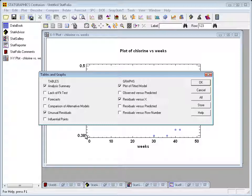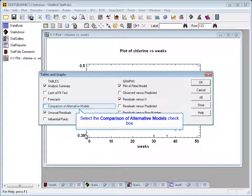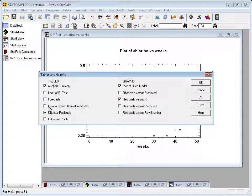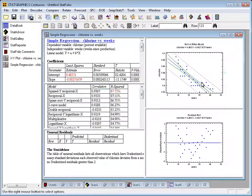The tables and graphs I'll want to see: first off, I'll want to see the analysis summary. Secondly, the comparison of alternative models. That's going to be the important one. I can also get a table of unusual residuals, a plot of the fitted model, the plot of the residuals versus X. All that looks good. Let's go ahead and press OK.